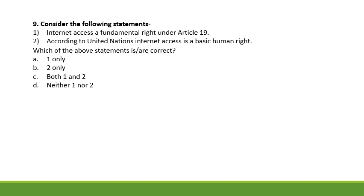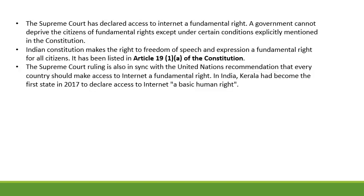Next, consider the following statements. Statement one: internet access is a fundamental right under Article 19. Statement two: according to the United Nations, internet access is a basic human right. Both statements are correct. The Supreme Court has affirmed internet access as a fundamental right under Article 19, and before that, the Kerala High Court had held it to be a fundamental right under Articles 21 and 19. The United Nations has also declared it a basic human right.